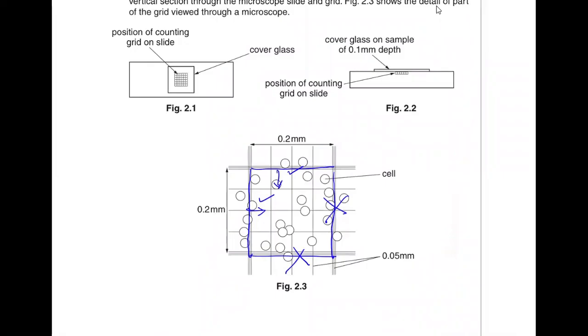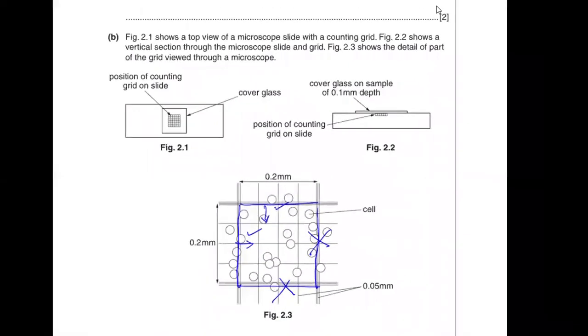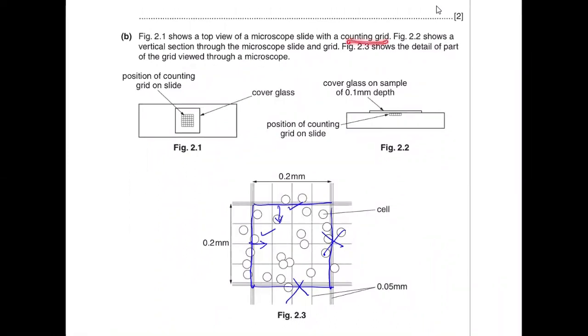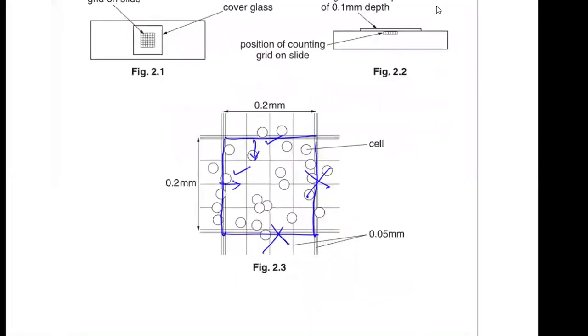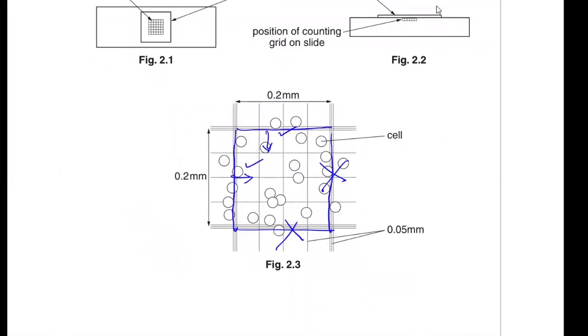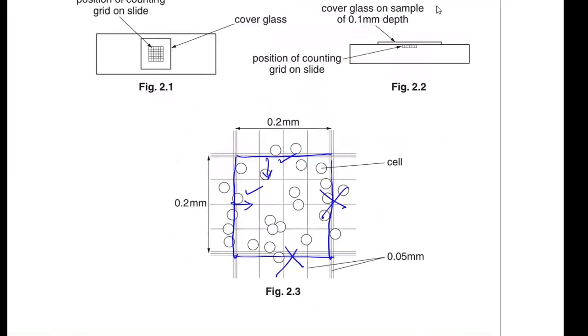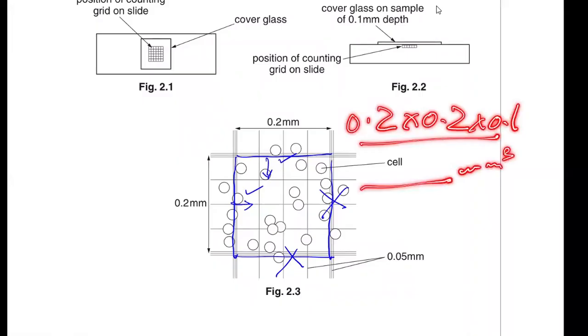One is being given growth hormone, the other distilled water. The one with distilled water is the control because you're not adding growth hormone, and you want to see how much cells can grow with and without growth hormone. A detailed description of the hemocytometer is presented. Figure 2.1 shows the top view of a microscope slide with counting grid. Figure 2.2 shows the vertical section through the slide and grid. Figure 2.3 shows detail of the grid viewed through microscope. The depth is 0.1 millimeter. The length of this square is 0.2 millimeter, width is 0.2 millimeter, and depth is 0.1 millimeter. Calculating this volume gives the liquid sample that can be held in this slide.